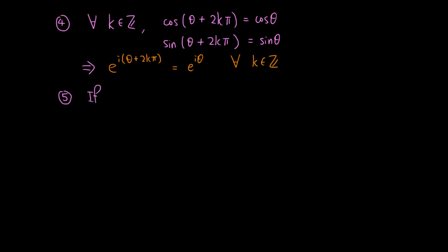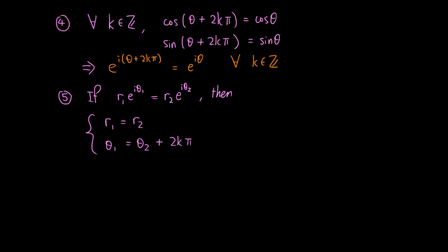With this observation, we can deduce that whenever we have two complex numbers which are equal — say r₁ e to the iθ₁ equals r₂ e to the iθ₂ — then r₁ equals r₂ and θ₁ equals θ₂ plus 2kπ for some integer k. That is, their absolute values must be the same, and their arguments are the same up to a multiple of 2π.